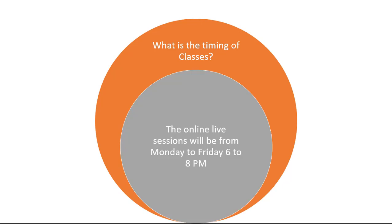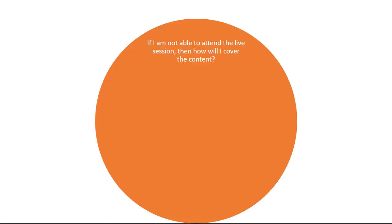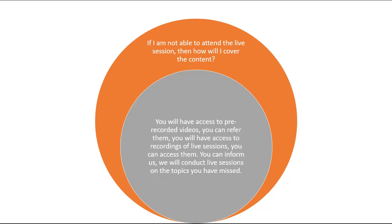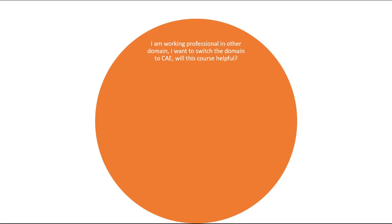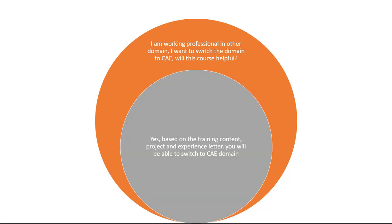What are the class timings? Online live sessions will be Monday to Friday, 6 PM to 8 PM in the evening. If you are not able to attend a live session, you will have access to pre-recorded videos and recordings of live sessions. We will also conduct live sessions on missed topics on weekends and weekdays. If you are a working professional wanting to switch to CAE, this course will help. Based on our past experience, more than 4,000 students who attended Eleation's ANSYS and Hyperworks training program successfully moved their domain to CAE.